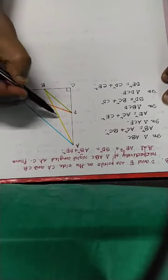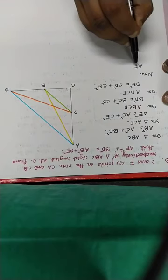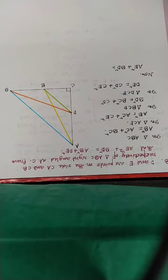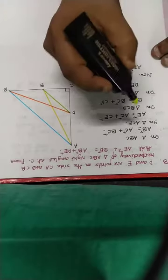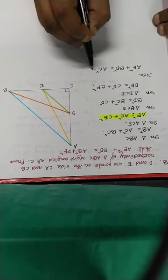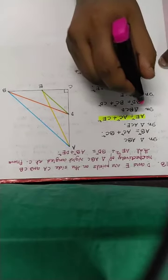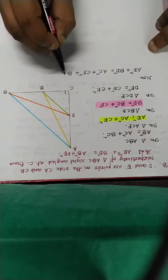Now we'll substitute. We have AE square plus BD square. AE from earlier is AC square plus CE square, plus BD square which is BC square plus CD square. This gives us AC square plus CE square plus BC square plus CD square.